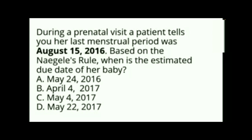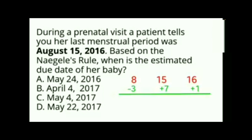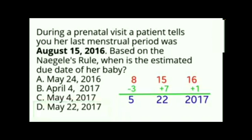Last Nagel's Rule example: LMP is August 15, 2016. August is month 8: 8, 15, 2016. Applying minus 3, plus 7, plus 1: 8 minus 3 is 5 (May), 15 plus 7 is 22, 2016 plus 1 is 2017. The estimated due date is May 22, 2017. The correct answer is letter D.